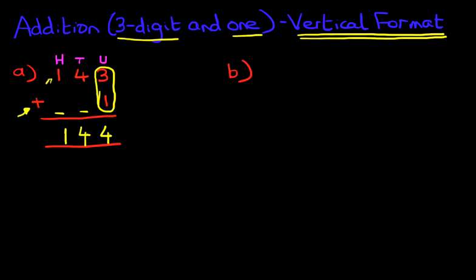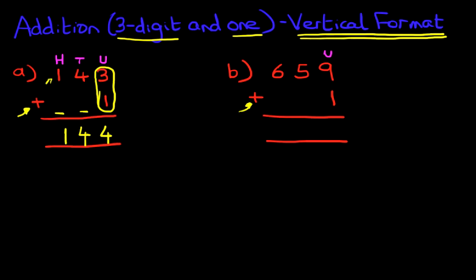We're now going to look at our second example. This time we have six hundred and fifty-nine plus one. We can label the columns — units, tens, and hundreds — and we can now begin the addition. Where do we start? We always start on the right-hand side. I'm sure you know that by now.